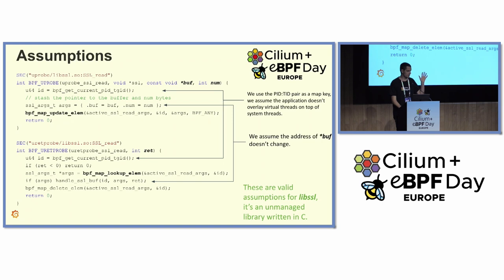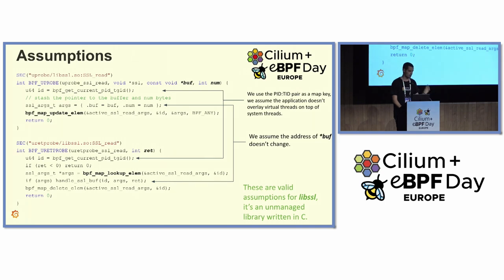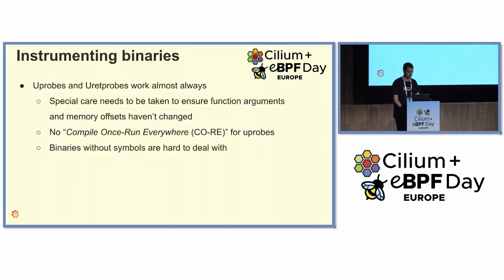This is a relatively simple example because SSL is written in C — an unmanaged language, an unmanaged runtime. So we can make assumptions like the buffer we're reading: the buffer with SSL contents doesn't change address. The buffer content might change, but the address of that buffer is the same when the function starts and when the function ends. This is not always the case in other languages from managed runtimes.